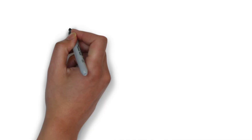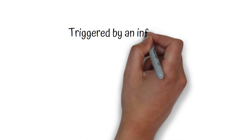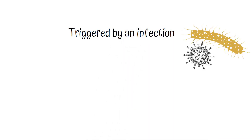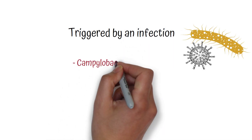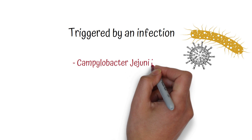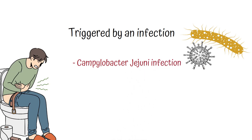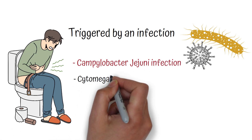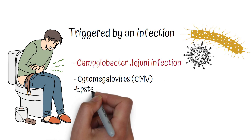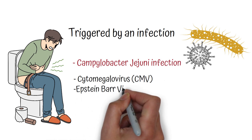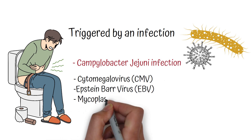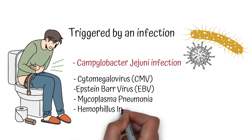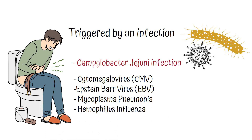Guillain-Barré syndrome is usually triggered by an infection. The most common infection is Campylobacter jejuni infection that can cause gastroenteritis. It can also be triggered by cytomegalovirus infection, Epstein-Barr virus infection, Mycoplasma pneumoniae, and Haemophilus influenzae.